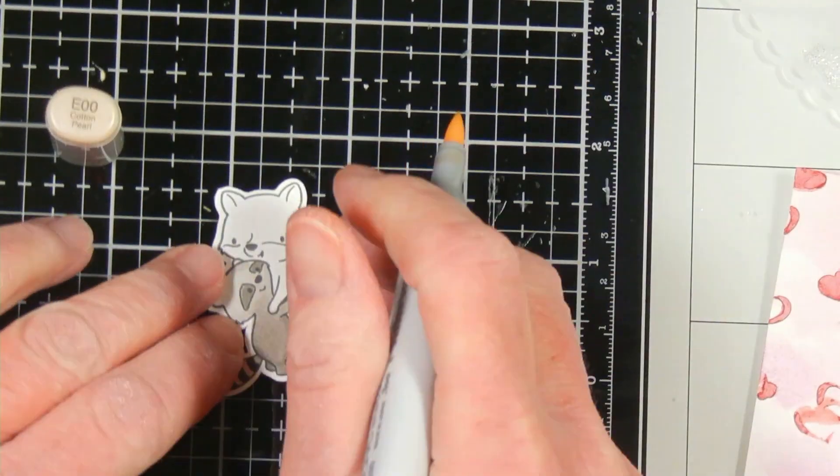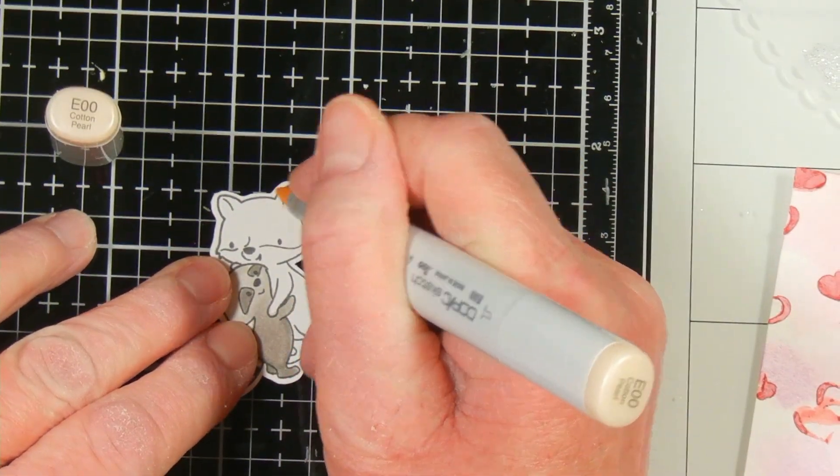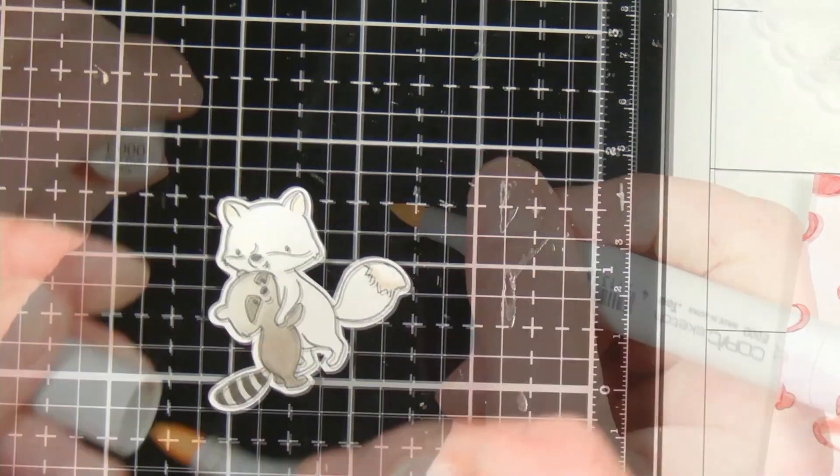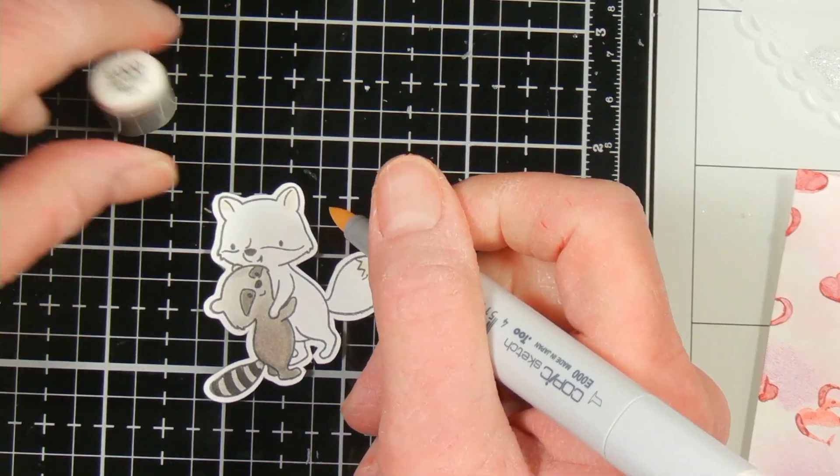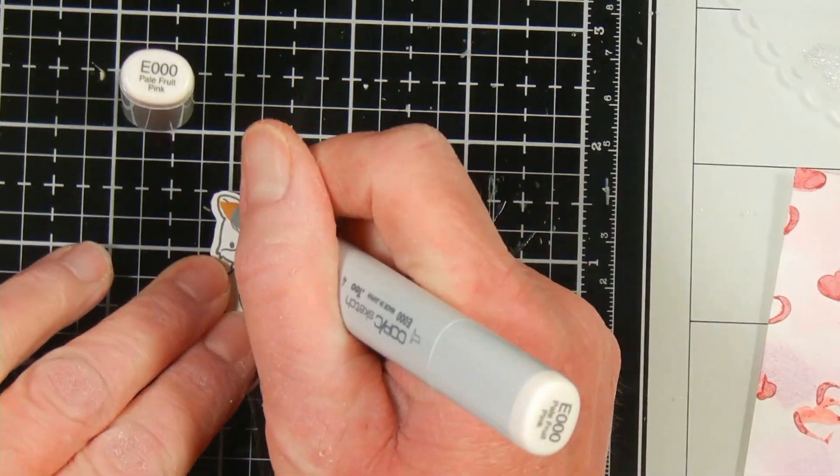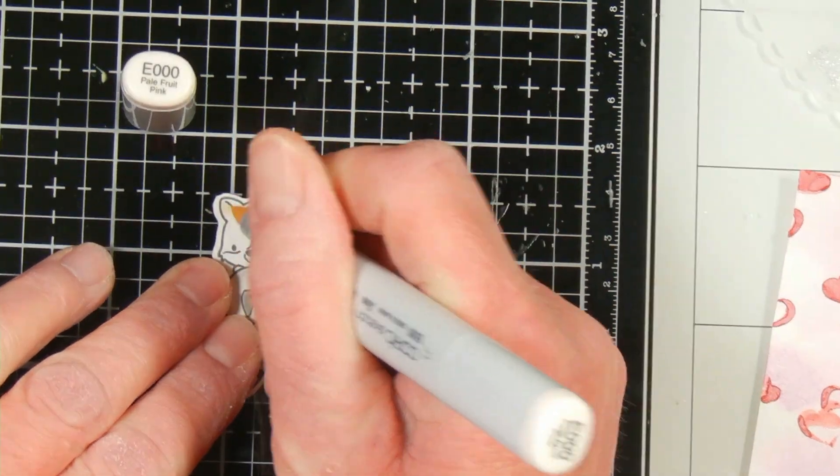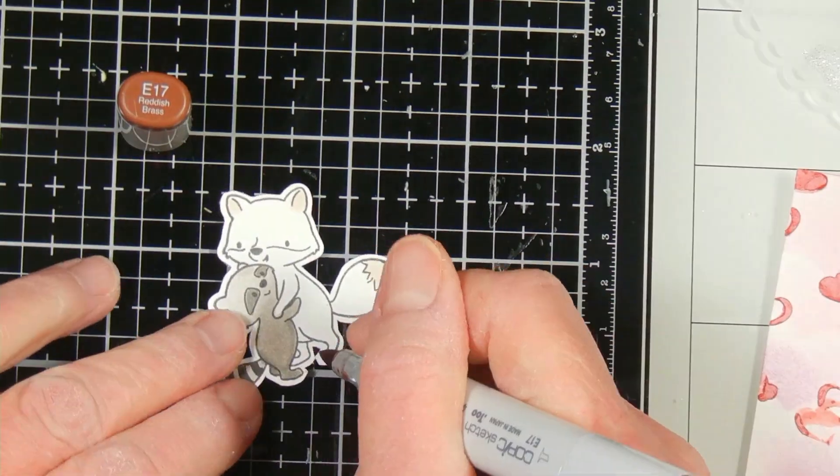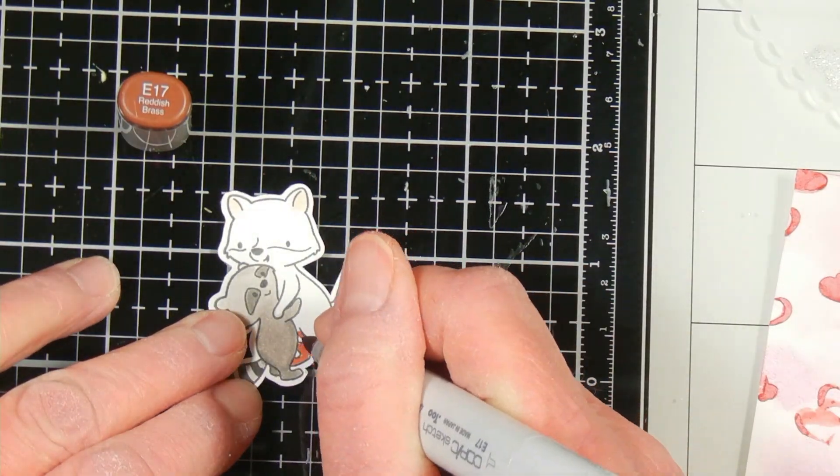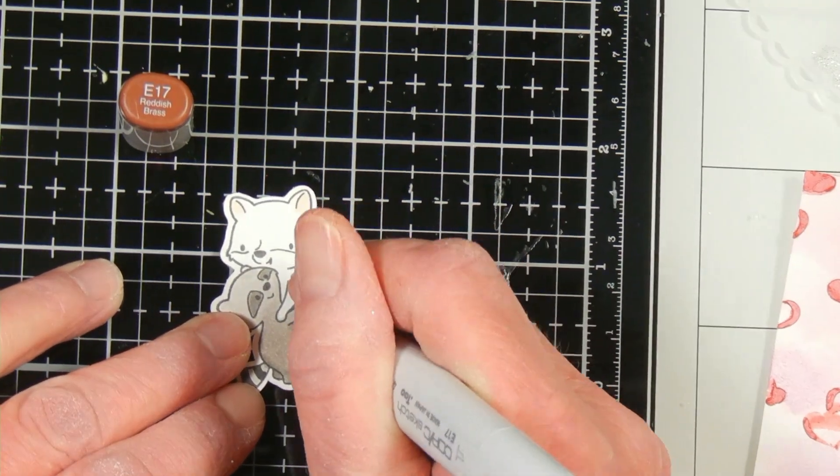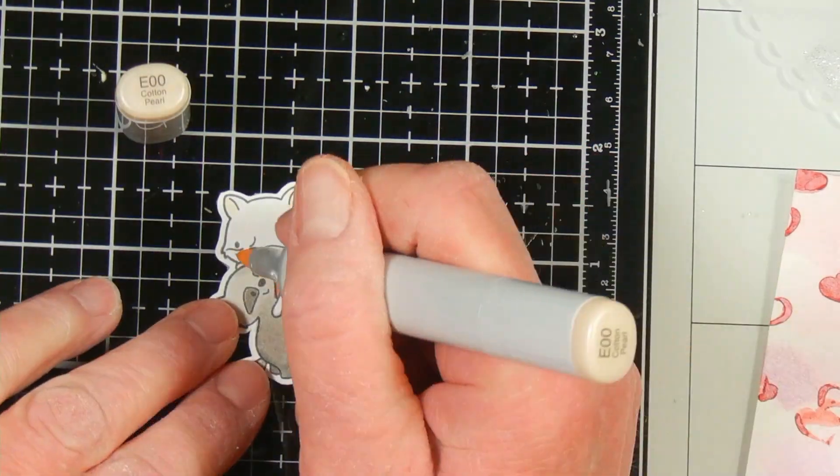For the Fox's ear I'm using E00 and E000. That's their Cotton Pearl and their Pale Fruit Pink. I thought since they're a pale pink that would go better with the card since it's a pink and red theme. For the main part of the Fox I start off with E17 which is reddish brass. Of course I picked these shades because they have a reddish tint to them.